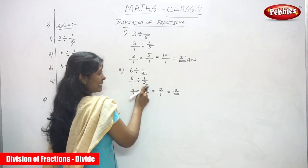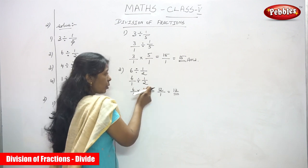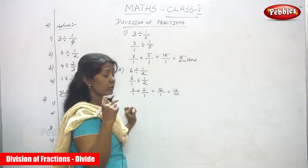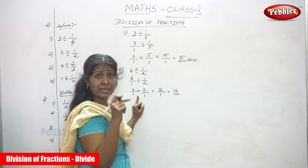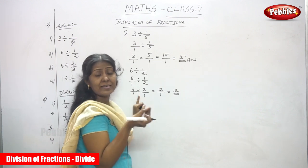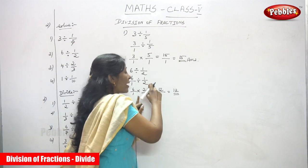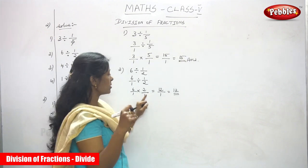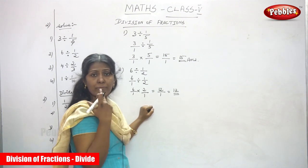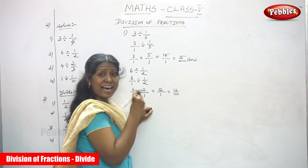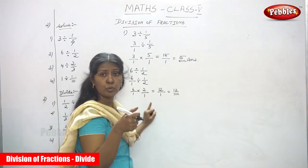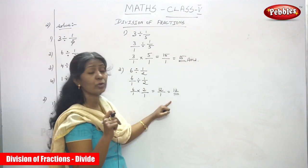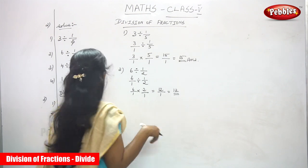So 6 by 1 divided by 1 by 2 — this is the divisor and this is the dividend. Make the divisor a reciprocal: 1 by 2 becomes 2 by 1, upside down. Step 3: multiply the dividend and the reciprocal of the divisor — 6 by 1 into 2 by 1. 6 into 2 gives 12, and 1 into 1 gives 1, so 12 divided by 1 equals 12. That is the answer.